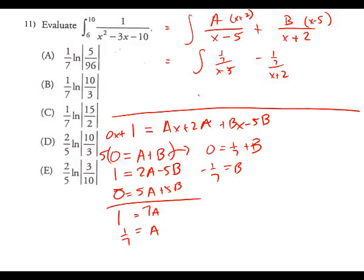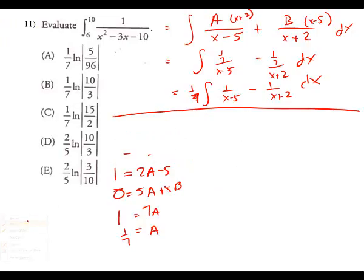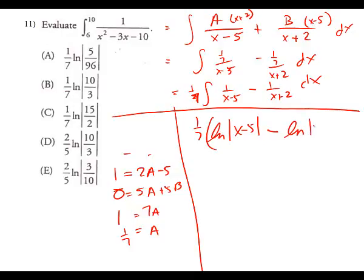Factoring out one-seventh: one-seventh times the integral of one over (x minus 5) minus one over (x plus 2), DX. Integrating: one-seventh times [natural log |x minus 5| minus natural log |x plus 2|], from six to ten. Using log rules, subtraction becomes division: one-seventh times natural log |x minus 5 over x plus 2|, from six to ten.